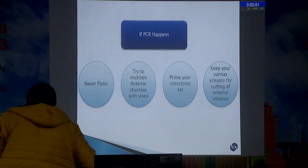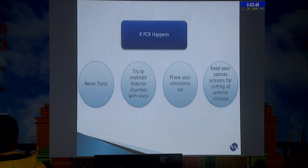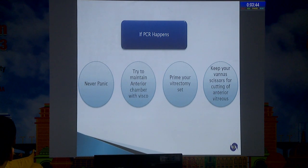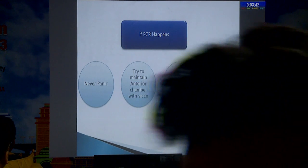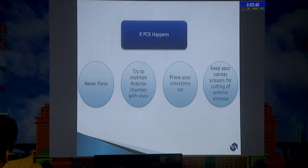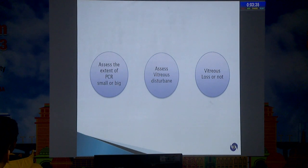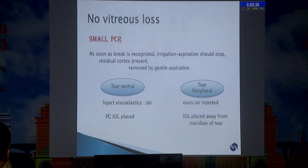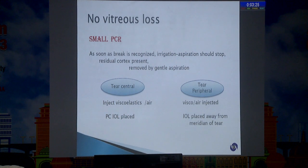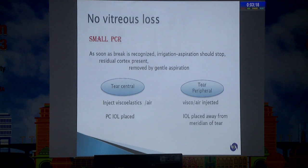If the PCR happens, again, don't panic. Try to maintain the anterior chamber with viscoelastic. As you remove the cannula, put the viscoelastic on the side port, and see that your vitrectomy set is already ready, and keep your Vannas scissors also ready in case the machine doesn't start. Assess the extent of the PCR — whether it's small or big — and whether there is vitreous loss. If there's no vitreous loss and it's a small PCR, you can still proceed. Stop irrigation and take out the cortical matter left behind, then assess the case again.